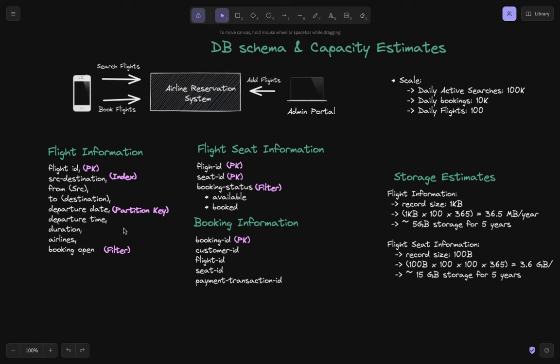Once bookings are done, a booking information table records the booking ID, customer, flight, seat, and an attached payment transaction ID — referencing payment details handled by a third-party integration. These three tables together back search and book: flight information for search, flight seat information and booking information for book.